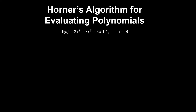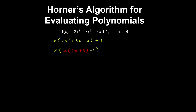Let's look at Horner's algorithm for evaluating a polynomial, and this is best illustrated using an example. What we do is factor out x, and we have 2x squared plus 3x minus 4 plus 1. We keep repeating this process by factoring out another x, giving x by 2x plus 3, minus 4 plus 1.